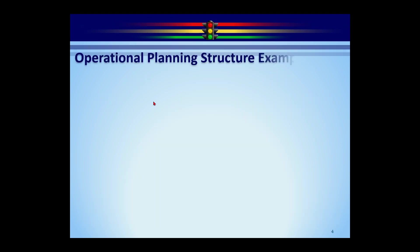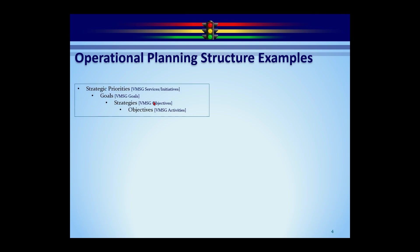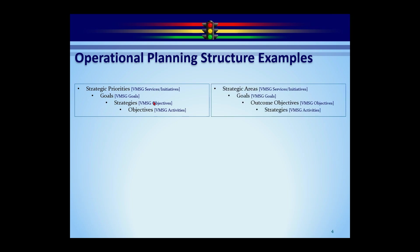That's the pyramid. There are many different versions — this is the most common. I'll walk through some variations so you can see how your plans might fit. One common version uses 'strategic priorities' at the top instead of services or initiatives, then goals, strategies at the objectives level, and then objectives where we have activities — somewhat reversed from my usual nomenclature.